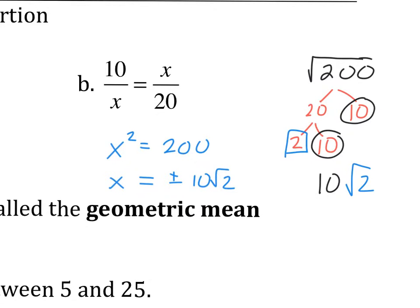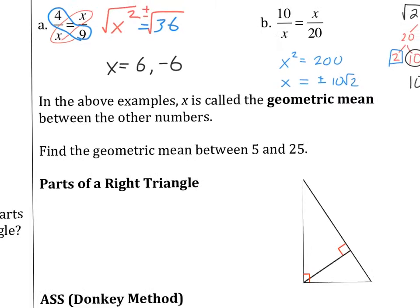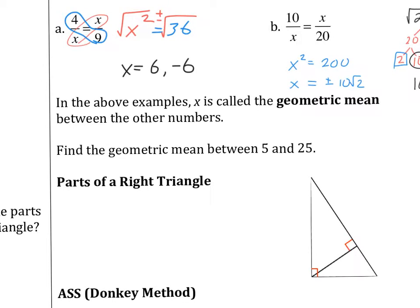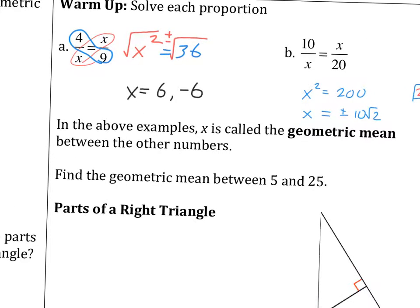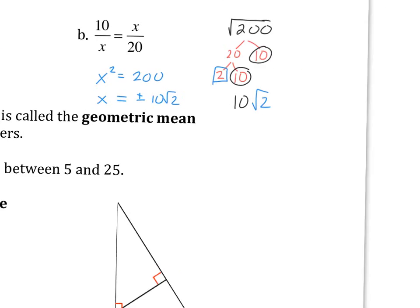Next up is the same idea here. I can just jump to x squared equals 200. And then when I simplify that, I get plus or minus 10 radical 2. In this above example right here, when x is repeated, this is called a geometric mean.